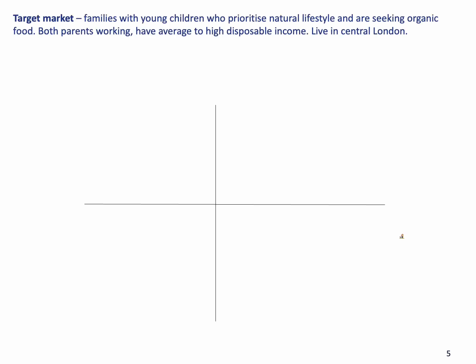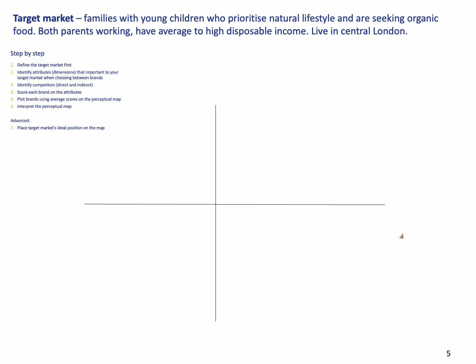Let's now put this all into practice and draw a Perceptual Map using our step-by-step guide. For the illustration of this example, our target market would be families with young children who prioritize a natural lifestyle — meaning they try to eat more natural foods, use more natural medicine, get a lot of fresh air, exercise, and when they buy hygiene or home products they look for natural, healthier ingredients, better for health and environment. As such, they are seeking organic food. They have both parents working, average to high disposable income, and they live in central London. That would be an example target market for grocery shoppers.